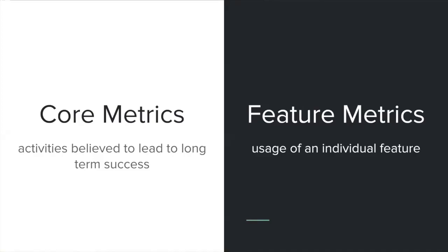What we've been driving at is the distinction between core metrics — activities believed to lead to long-term success, like growth, funnel, and engagement metrics — and feature metrics. Feature metrics are metrics around a given capability, like the number of times people use search. That's probably not a metric that directly adds to the bottom line. If you run an experiment and fewer people come back after searching but they're searching more, you can see that searches (a feature metric) went up, but overall engagement (a core metric) went down. Feature metrics always lose to core metrics — that's what you have to keep in mind as you build new capabilities.